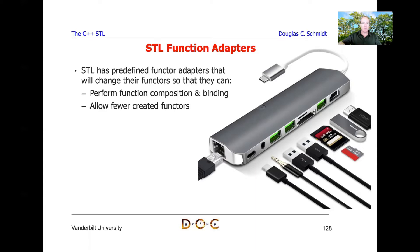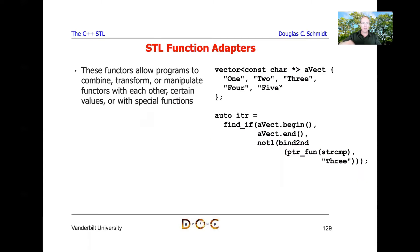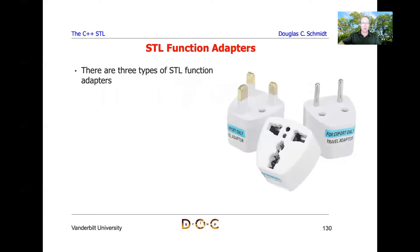In addition to not having to create as many functors, you can chain together a bunch of functors in order to do very powerful composition of capabilities. This is particularly useful for predicates. These functors allow programs to combine, transform, and manipulate functors with each other, with certain values, or with other special functions. We'll see some really fun examples that show off all these capabilities shortly.